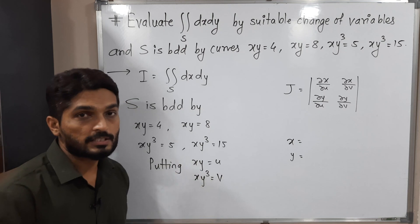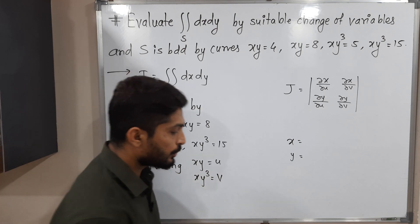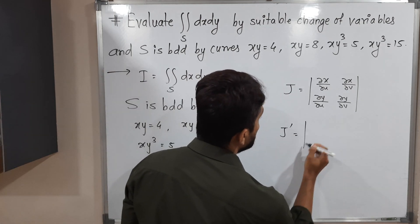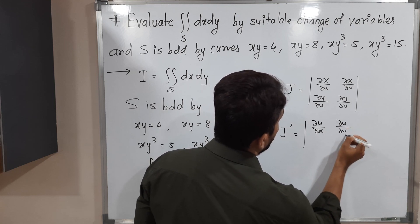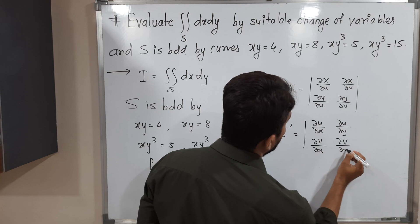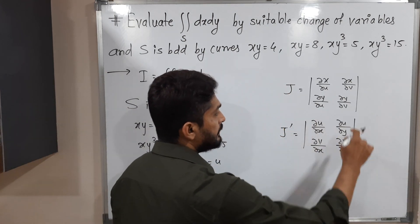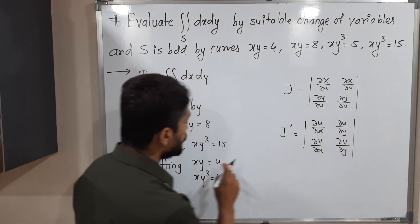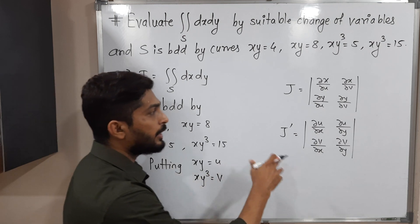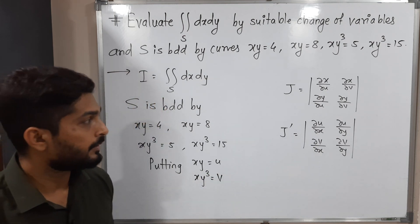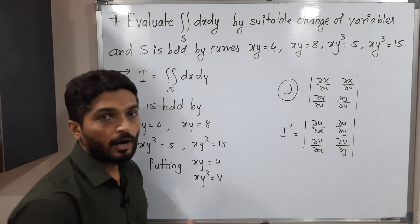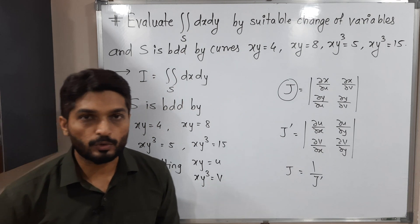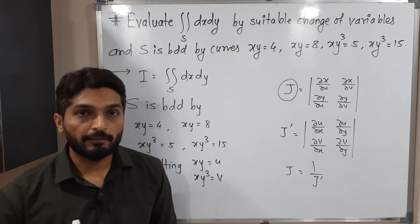So instead of finding J, we will find J'. J' is the determinant of ∂u/∂x, ∂u/∂y, ∂v/∂x, ∂v/∂y. We have to find these four partial derivatives. This is a comparatively easy task since we already have u and v expressed in terms of x and y, so we simply take their derivatives. Finally, J is the reciprocal of J', so once we have J' we can easily get J.